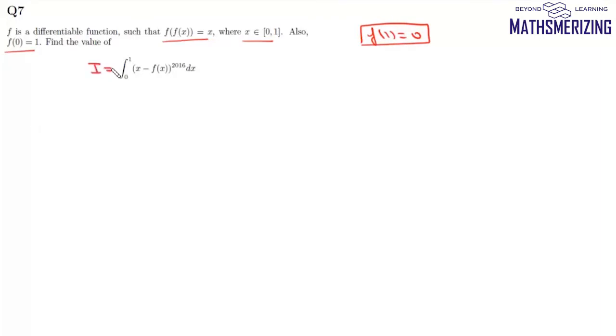Now we'll use substitution and let x = f(u), then dx will be f'(u)du. So we can write this integral as (f(u) - f(f(u)))^2016 f'(u)du, and f(f(u)) is simply u. When x is 0, u is 1, and when x is 1, u is 0.